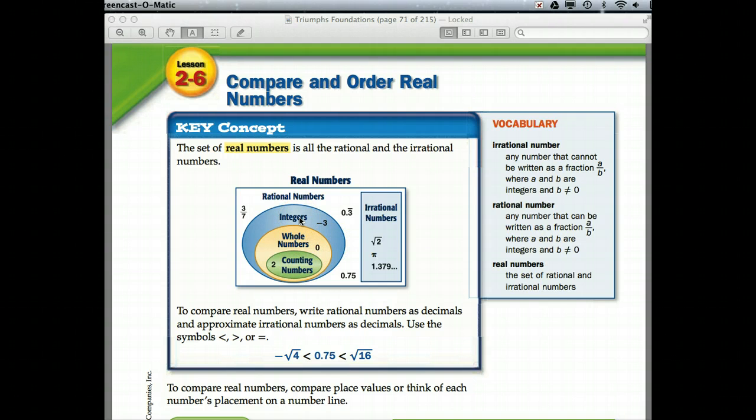Integers add the negative numbers. So, negative 3, negative 2, negative 1, 0, 1, 2, 3.